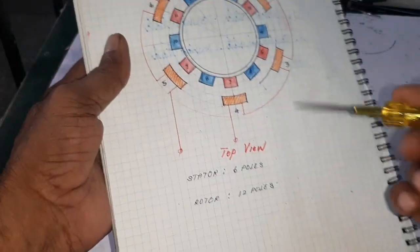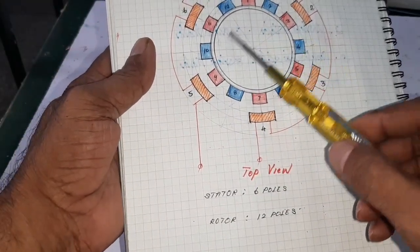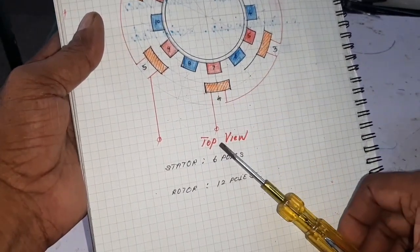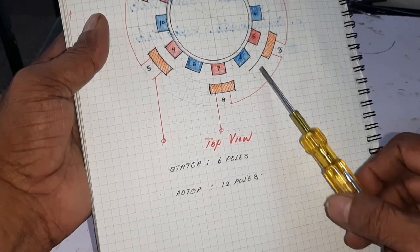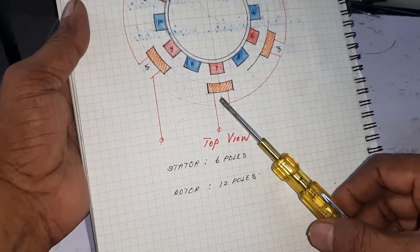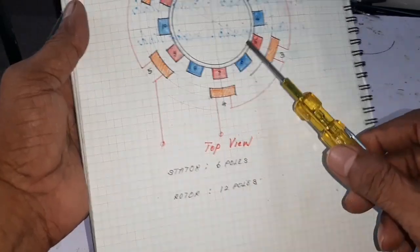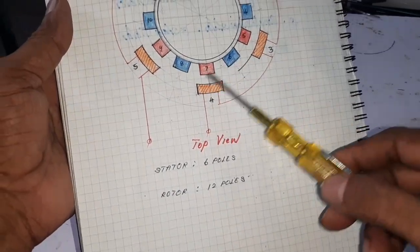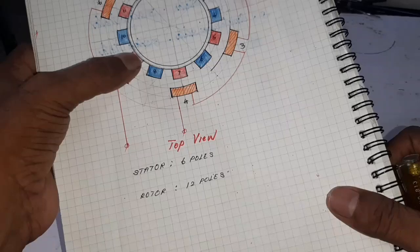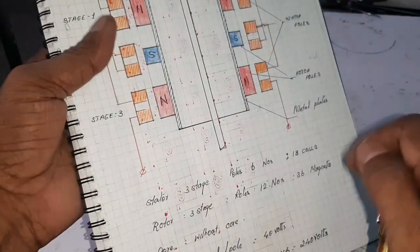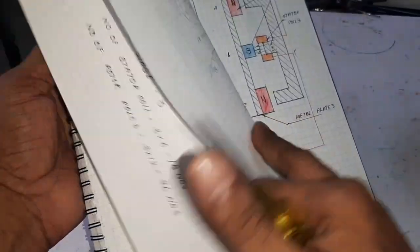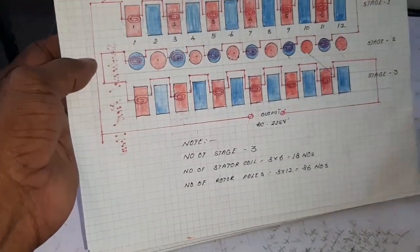This is the single-stage stator. The stator has 6 poles and the rotor has 12 poles. If I add 2 more stages to a single generator, the total number of rotor poles is 36 and the total number of stator coils is 18. This is the top view of the generator and this is the front sectional view of the generator. Now, here are the winding connections of the multi-stage 3-stage generator.